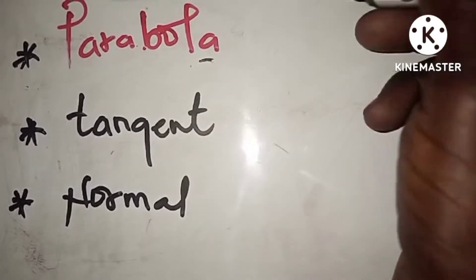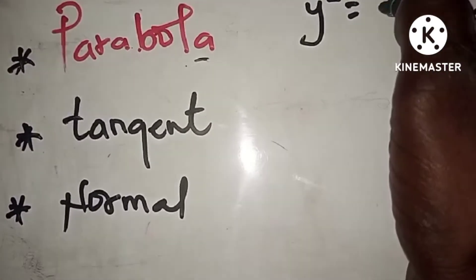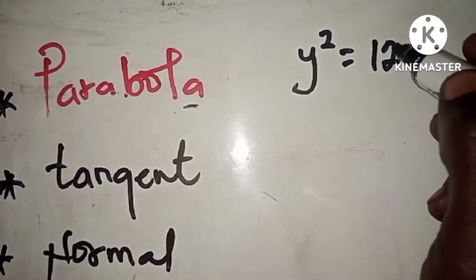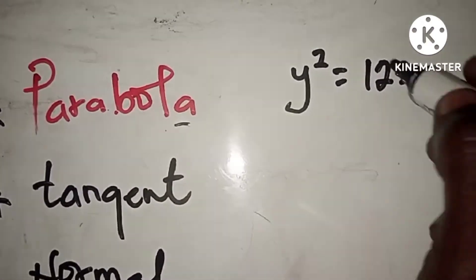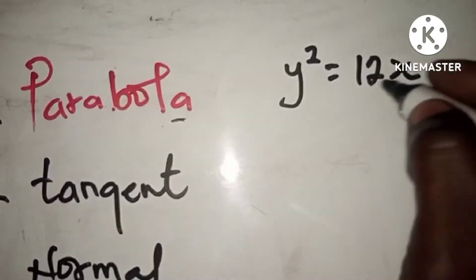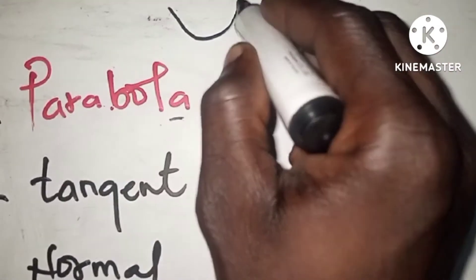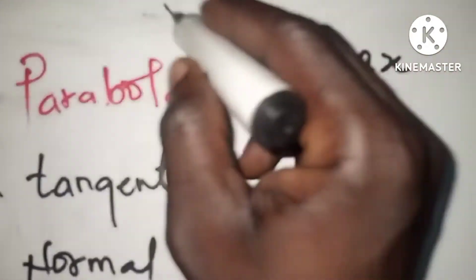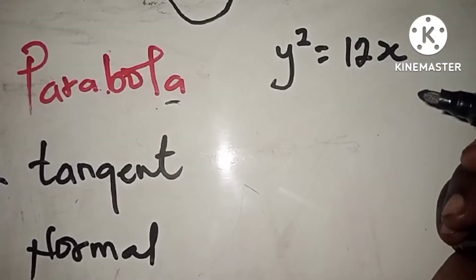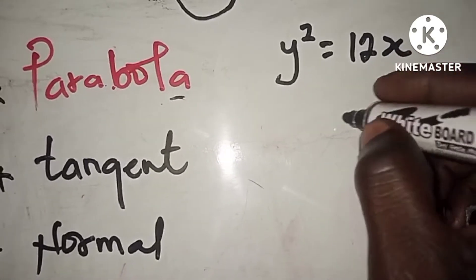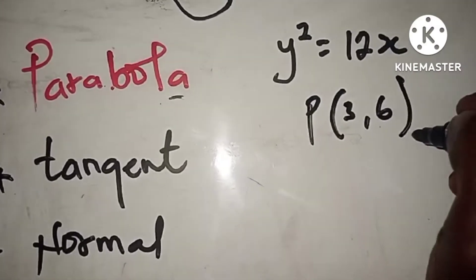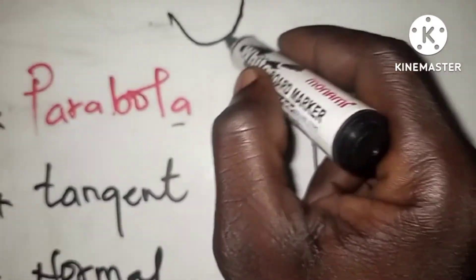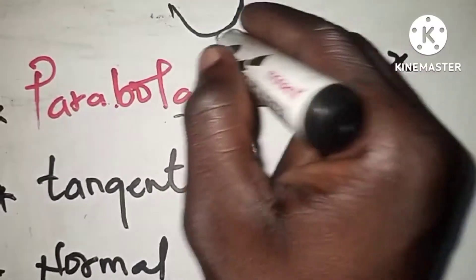From the question we are given: y squared is equal to 12x. We are calling this a parabola. This is a formula or definition that gives us that shape — the shape of a parabola. This is one way of getting this shape, and this parabola passes through the point three comma six.